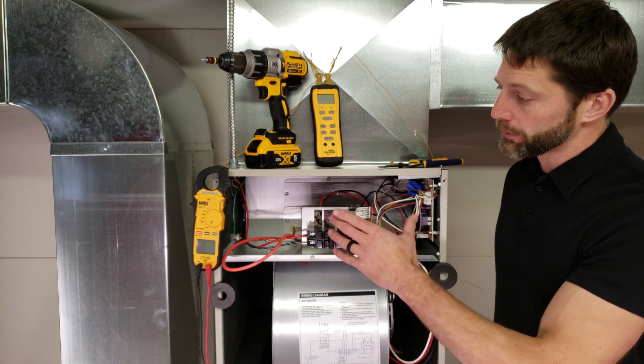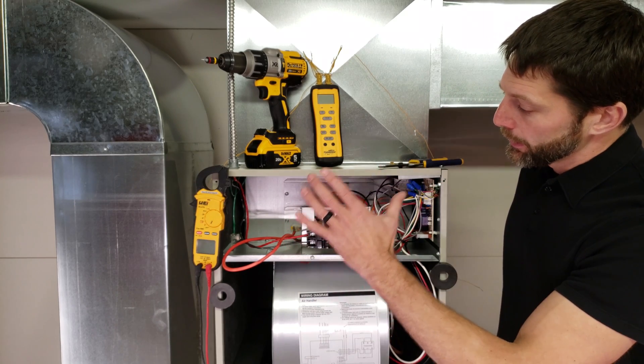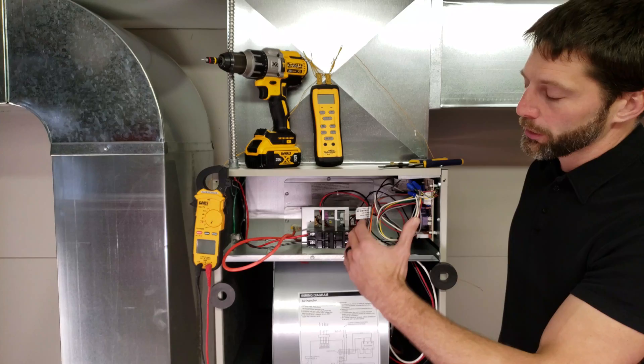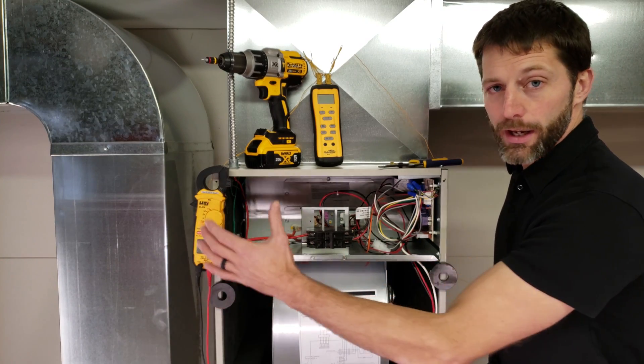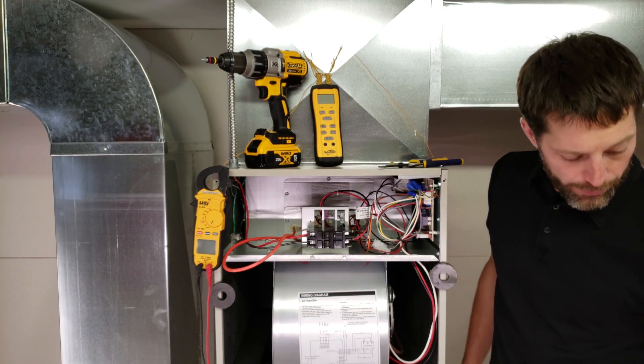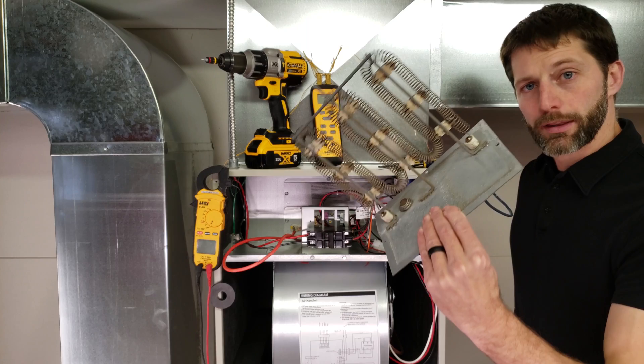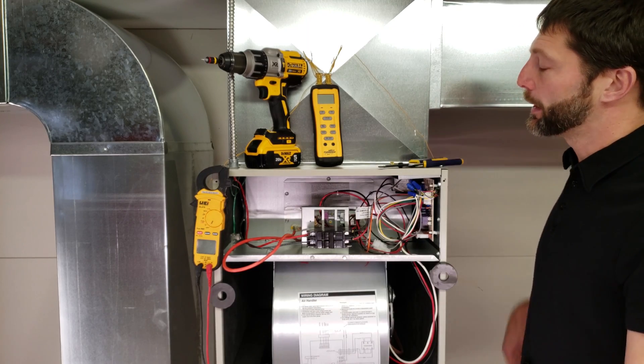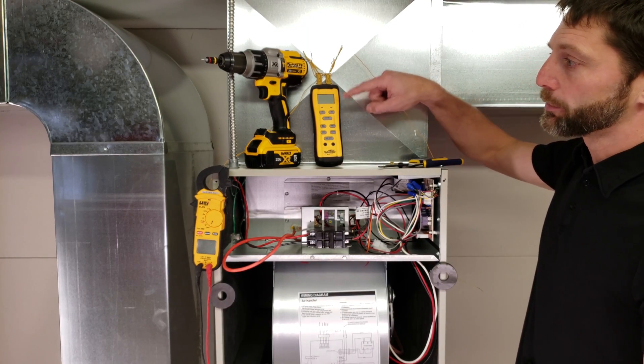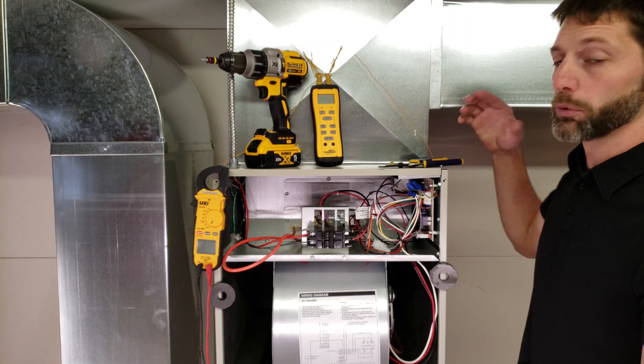So we're going to be measuring the CFMs of this system right here, but what we're going to be doing is we're going to be measuring the voltage and the amperage on the electric strip heater, and the strip heater looks just like this, and we're going to also be reading our temperature rise from the return duct to the supply duct in order to figure this out.